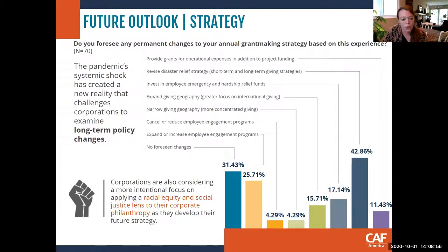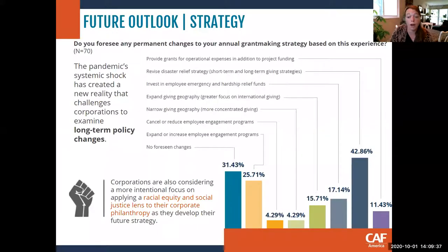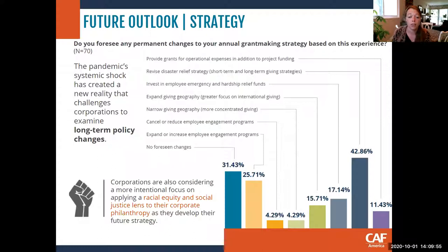We asked: 'Do you foresee any permanent changes to your annual grantmaking strategy based on this experience?' In many of the narrative responses, even though we didn't directly ask about it, corporate partners brought up how important social justice grantmaking is becoming to their philanthropy and how they're starting to build that into their long-term strategy. CAF America has always funded human rights and social justice initiatives, but this really highlighted it as a topic our corporate partners are actively looking into.